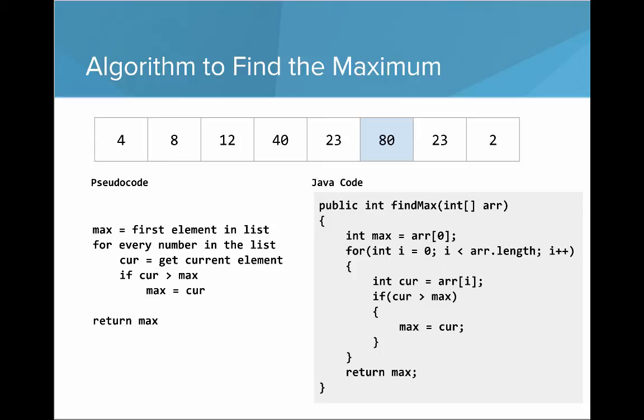So on the left, we have the pseudocode, and on the right, we have the very similar Java code. Public int findMax on an int array, it's called arr. We'll say int max equals arr zero, and then for int i equals zero, i is less than array dot length, i plus plus.